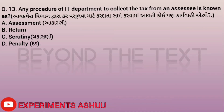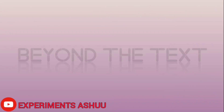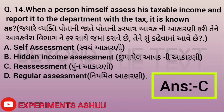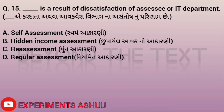Question thirteen: Any procedure of the IT department to collect tax from an assessee is known as assessment. Question fourteen: When a person himself assesses his taxable income and reports it to the department with the tax, it is known as self assessment, because he is doing everything himself. So the answer is A, self assessment.